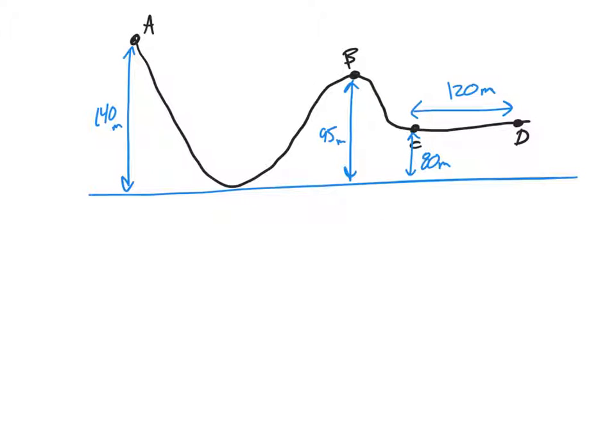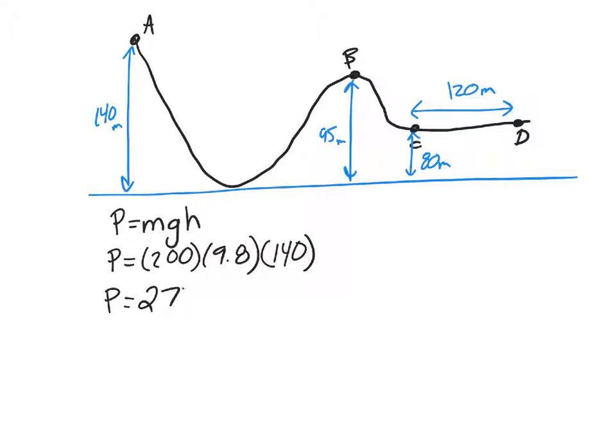Okay, to start this one off, they're asking us what is the potential energy at position A. So potential energy is equal to mass times gravity times height. Potential energy equals mass, which is 200 kilograms. So we have 200 times 9.8, and at position A the height is 140. So our potential is, wow, that's a big number, 274,400 joules.